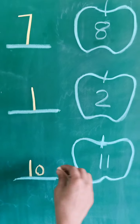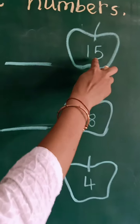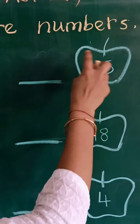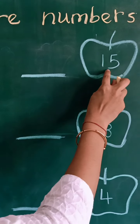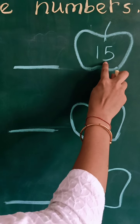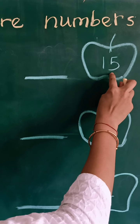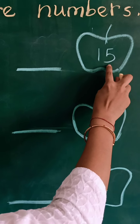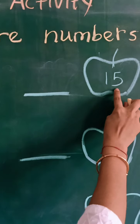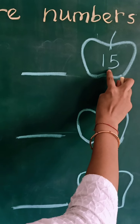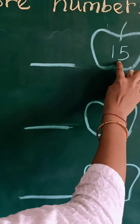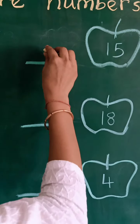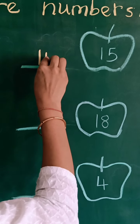Number 15. Which number comes before 15? We speak 11 to 15 numbers: 11, 12, 13, 14 and 15. Which number we speak before 15? Number 14.